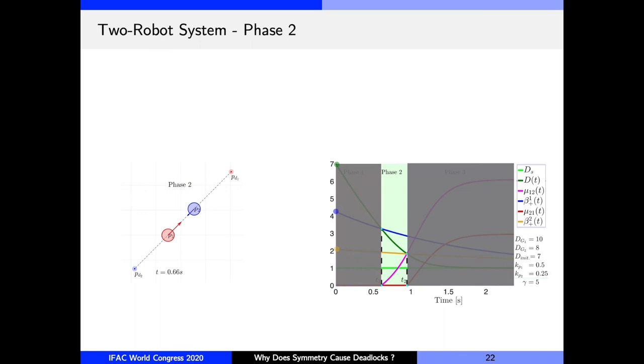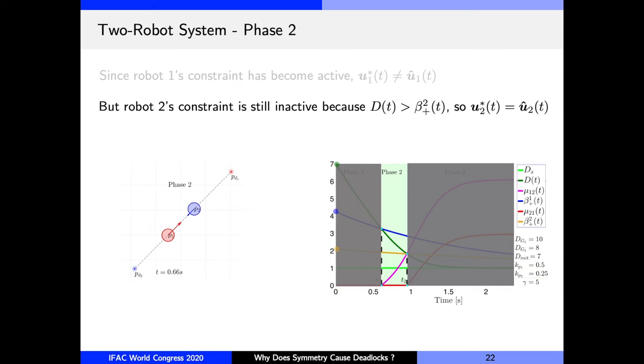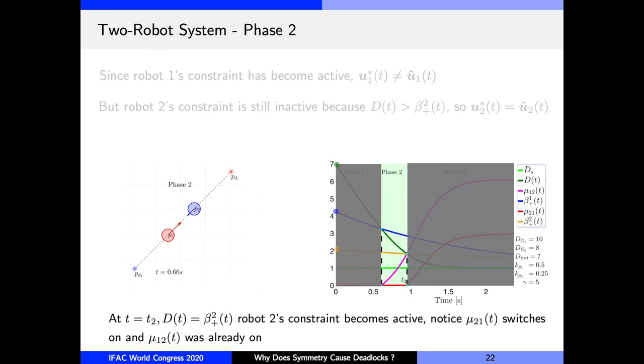So now that robot one's constraint has become active, it can no longer use u_1^cap. Meanwhile, robot two continues to move as though there was no robot around it, right? Its constraint is still inactive. Nevertheless, eventually there comes a time t_2 when d(t) crosses β_2(t) and so robot two's constraint also becomes active. And now robot two also enters the worry zone like robot one. Notice in the graph that at t equals t_2, the Lagrange multiplier of robot two switches on. This marks the beginning of phase three.